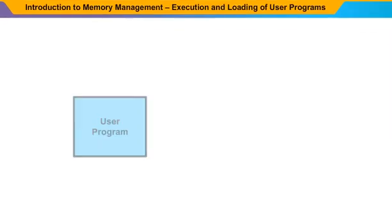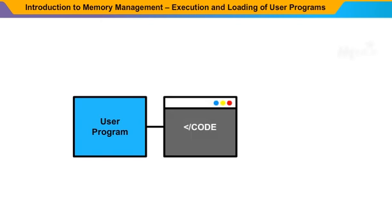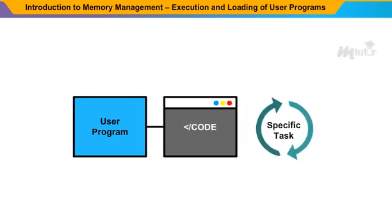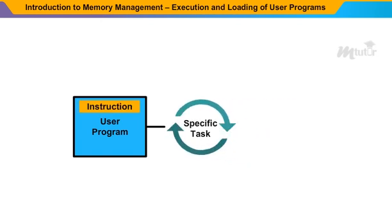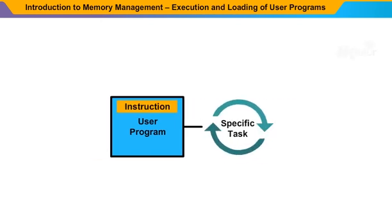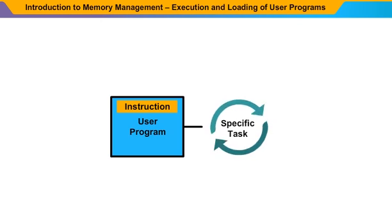A user program is a programming code that defines a specific action to be executed to perform a specific task. Each instruction of a user program is an explanation of a specific task to be carried out.